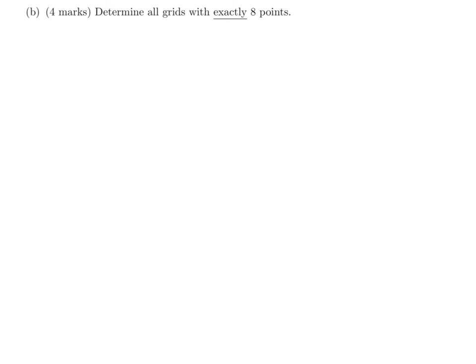Determine all grids with exactly eight points. We are looking at the sum of three rows, three columns, and two diagonals — that's eight sums total. Eight points means all eight of those sums have to be odd.